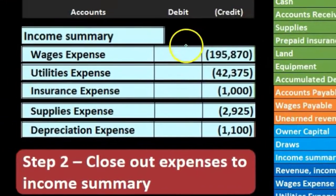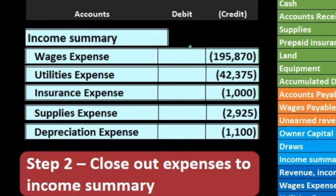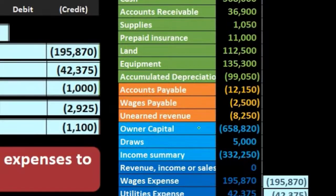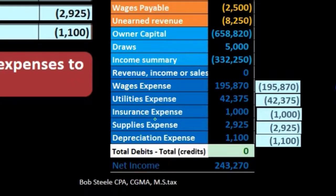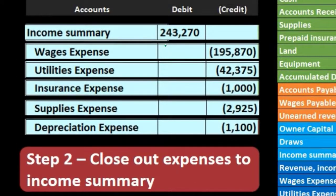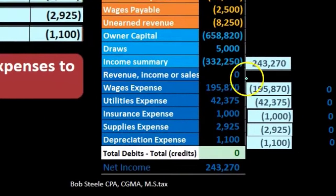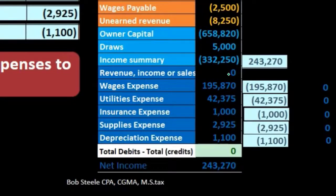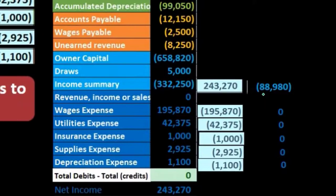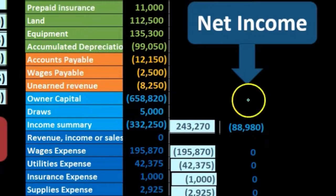Now we need to make the debits equal the credits for this journal entry, otherwise we won't be in balance. We're going to debit the income summary, which at this point has 332,250 — the revenue. Now we take all the expenses and put them into this one number: 243,270, and post that to the income summary. So we have revenue of 332,250 minus expenses of 243,270, giving us 88,980. What is that number? That is net income.